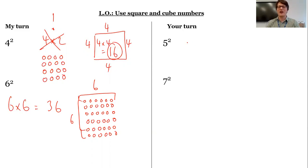So if you've got these, five squared is the same as five times five, which is 25. And then seven squared, same as seven times seven, which is 49.